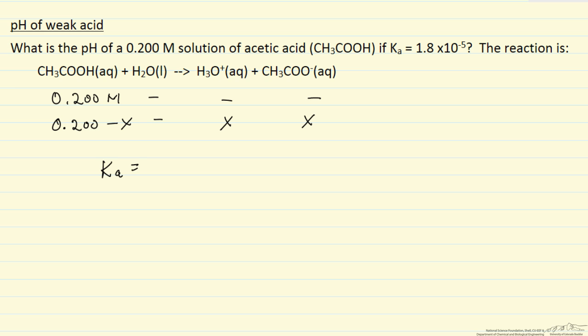Ka is equal to hydronium ion concentration times the acetate ion concentration over the acetic acid concentration. And all these are molars, so this is equal to 1.8 times 10 to minus 5, and strictly speaking this would have units of molar for this to be consistent.